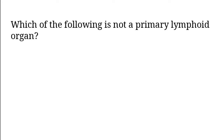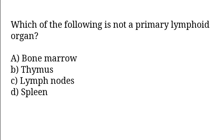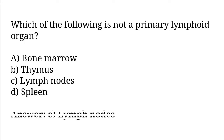Which of the following is not a primary lymphoid organ? A) Bone marrow, B) Thymus, C) Lymph nodes, D) Spleen. The correct answer is option C — Lymph nodes.